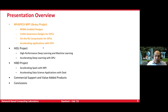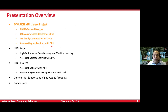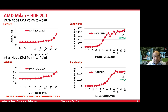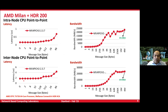I'll focus on a few key designs: RDMA-enabled designs, CUDA-aware designs for GPUs, and on-the-fly compression. Here are some sample numbers on the AMD Milan system with HDR 200. We get very good performance: intra-node core-to-core latency of almost 190 nanoseconds, and inter-node around 1.9 microseconds. Bandwidth-wise, both intra-node and inter-node, we are saturating the available bandwidth.